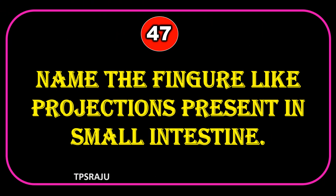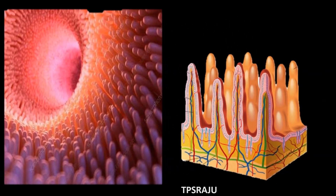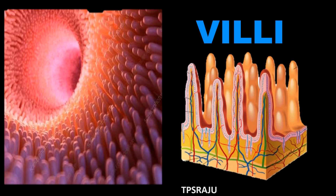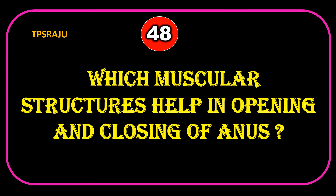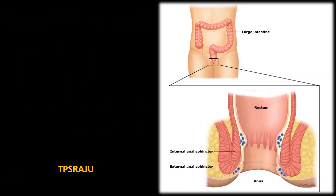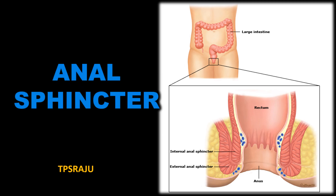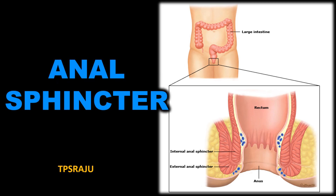Name the finger-like projections present in the small intestine. Villi. Which muscular structures help in opening and closing of the anus? The anal sphincter.